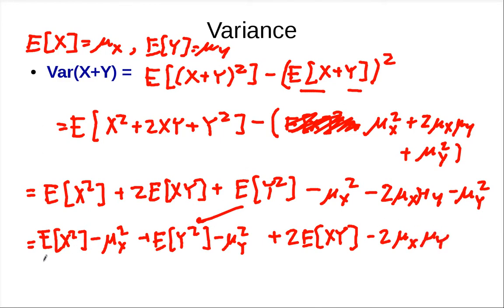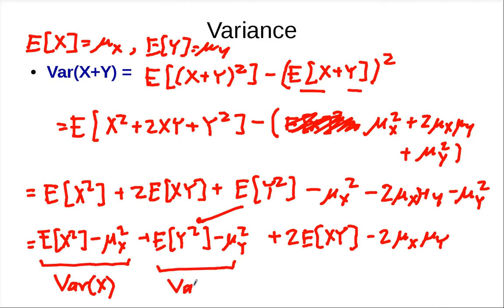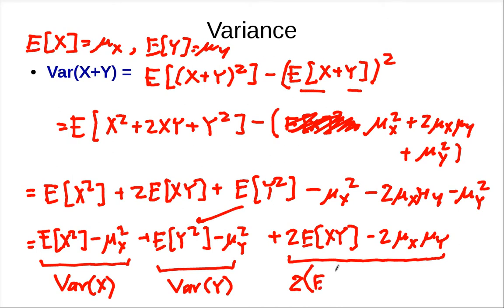Reordering the terms a bit: we get the expected value of x squared minus mu_x squared, plus the expected value of y squared minus mu_y squared, plus 2 times the expected value of xy minus 2 mu_x mu_y. If you look carefully, the first group is the variance of x, and the second group is the variance of y. Factoring out the 2, the last term becomes 2 times the expected value of xy minus mu_x mu_y.